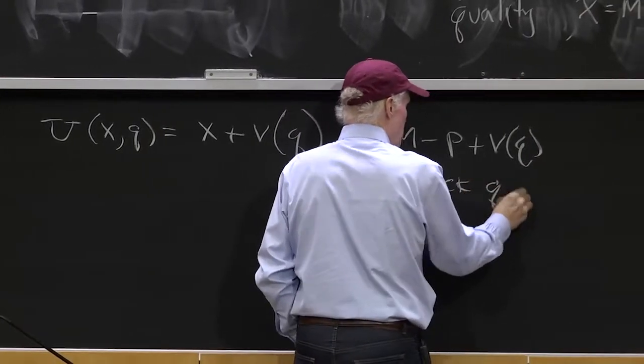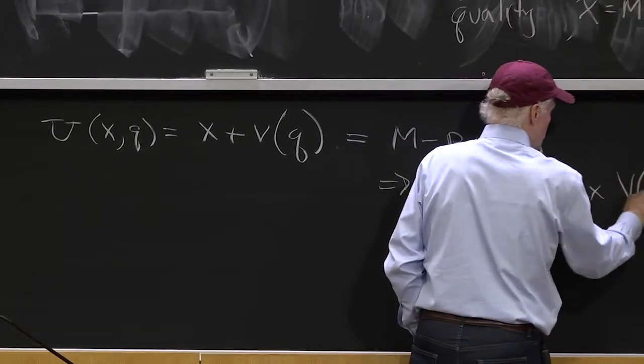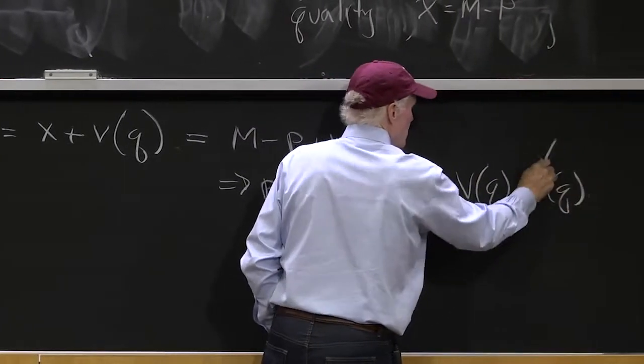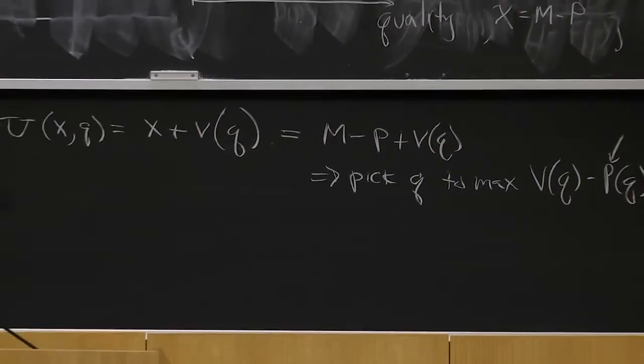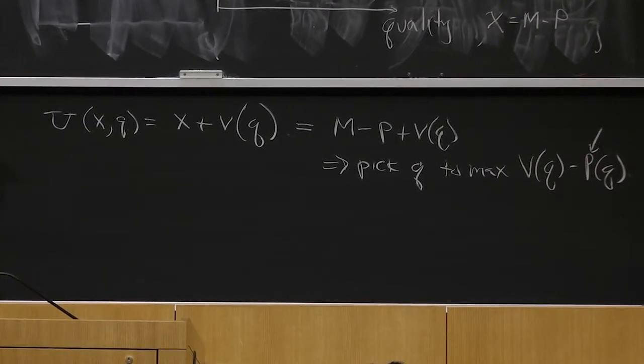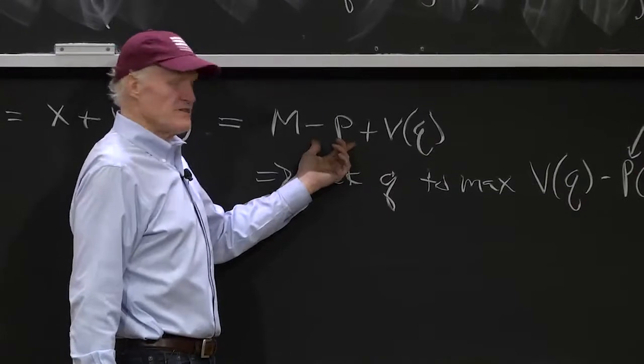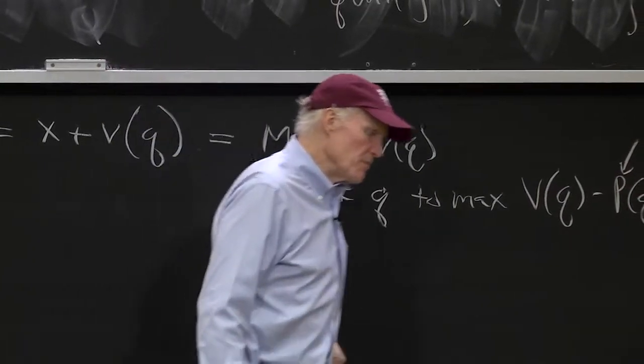Which implies pick q to maximize v of q minus p of q, where that's the market price for quality q. That's how much you pay for good of quality q. Because you're going to maximize the value less the cost of the TV. So that would be a simple model.